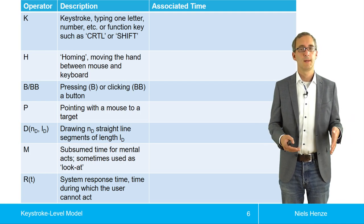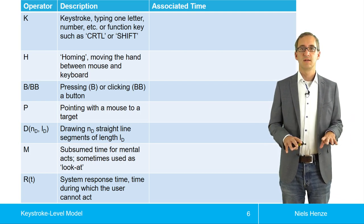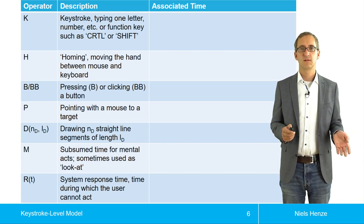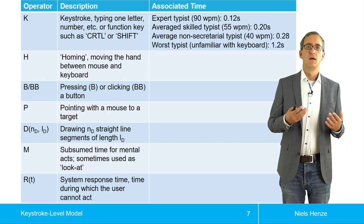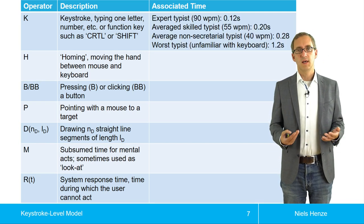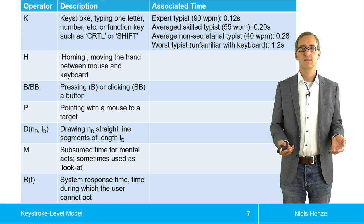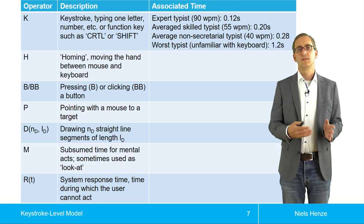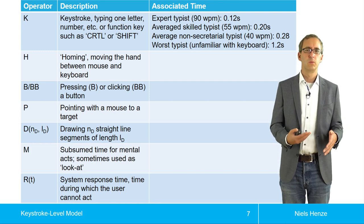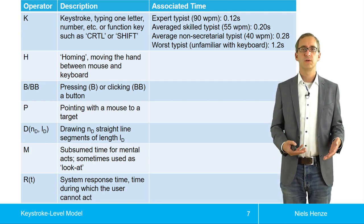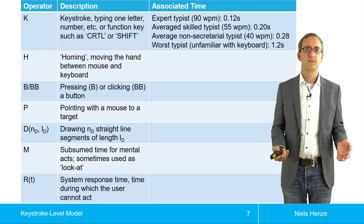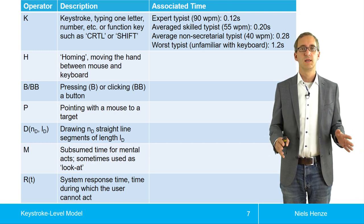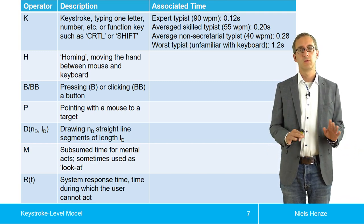An expert can type without looking on the keyboard, so the expert is much faster. There are different values for different types of users. It's typically assumed that an expert typist takes 120 milliseconds, an average skilled typist 200 milliseconds. Someone like me who is well used to keyboards but has never received formal training, maybe 280 milliseconds. Someone who has never used a keyboard, 1.2 seconds.